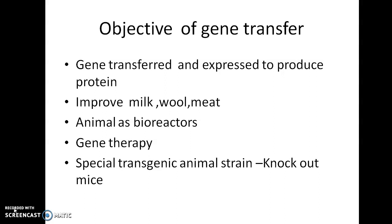You can also create special transgenic animal strains to fulfill biomedical needs. For example, if a person suffers from diabetes and lacks insulin, insulin can be produced and secreted in the milk of an animal created by transfection, allowing production of insulin, clotting factors, and other enzymes or hormones. These animals act as bioreactors.